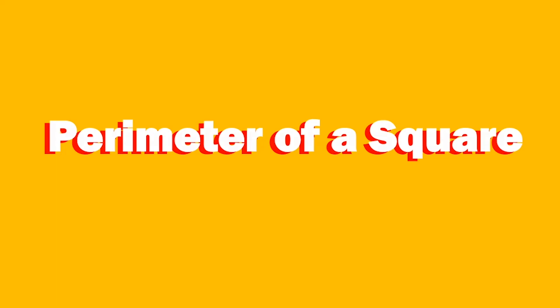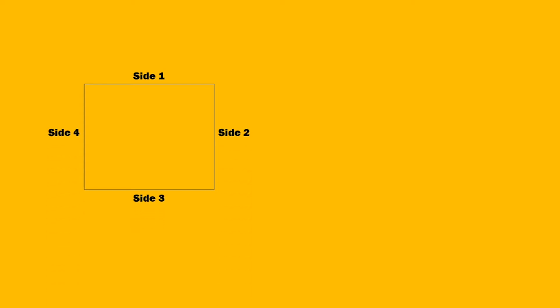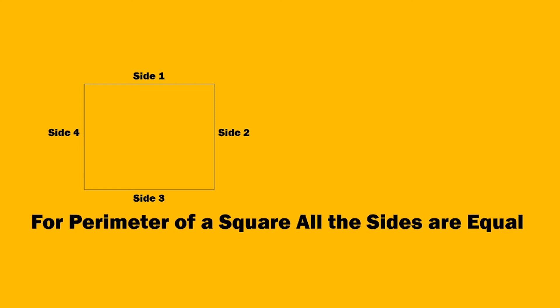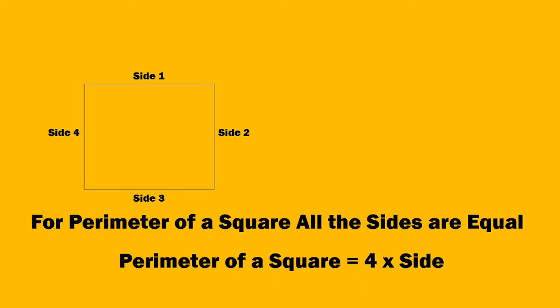We have a square wherein all the sides are equal — side one, side two, side three, side four. For parameter of a square, all the sides are equal. What is the formula for parameter of a square? The parameter of a square is four into side.